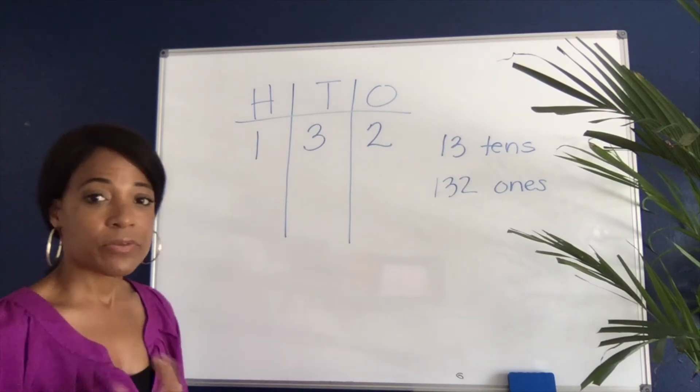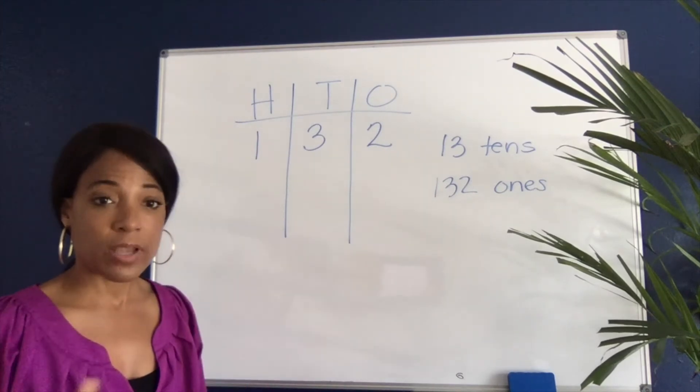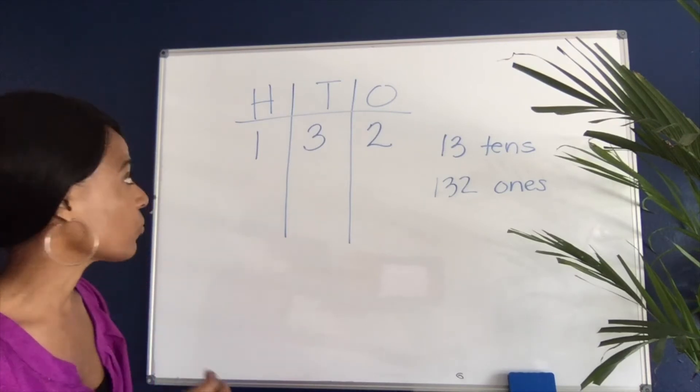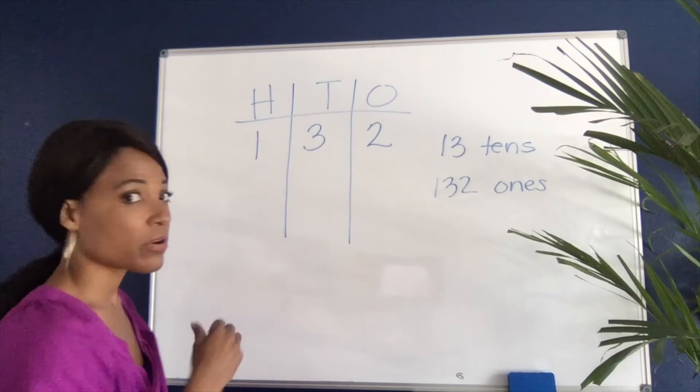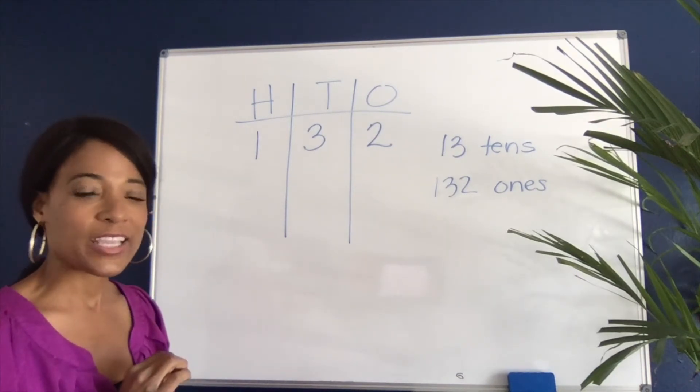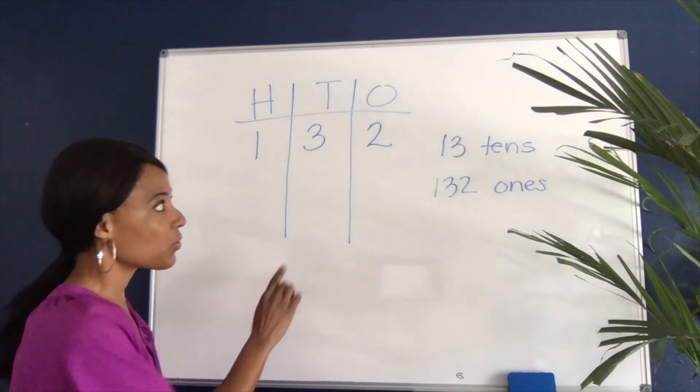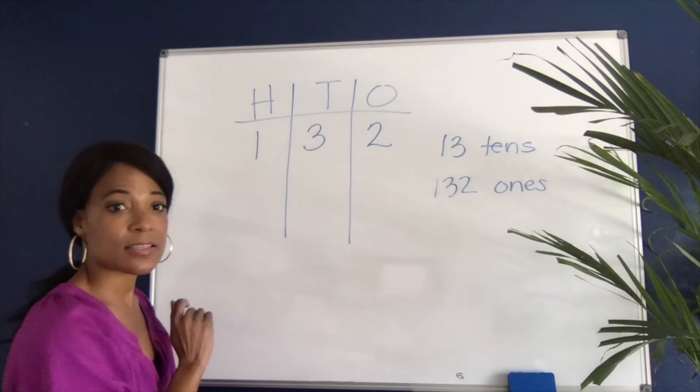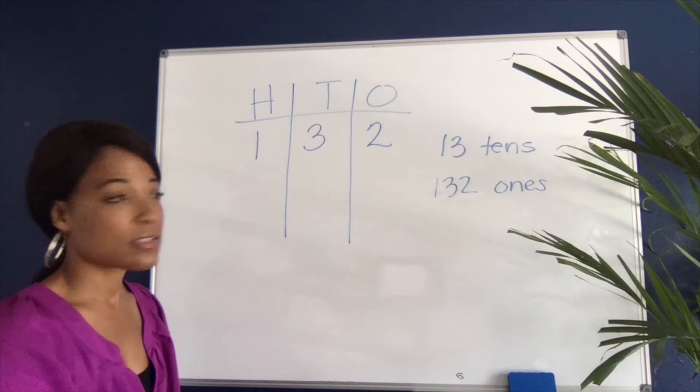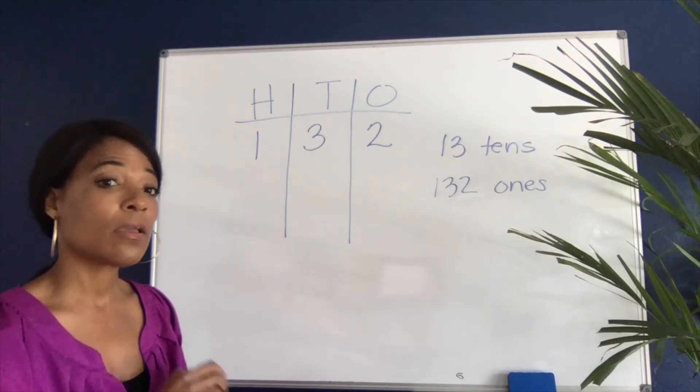That's important because it teaches students to look at the whole number and understand the value of those digits and what they really mean. In this number there is one whole hundred, but what we want kids to know is that there are not three tens in this number—there is a three in the tens place, but there's actually 13 tens and 132 ones. That's one of the reasons why we want to hold off on showing kids how to use the standard algorithm.